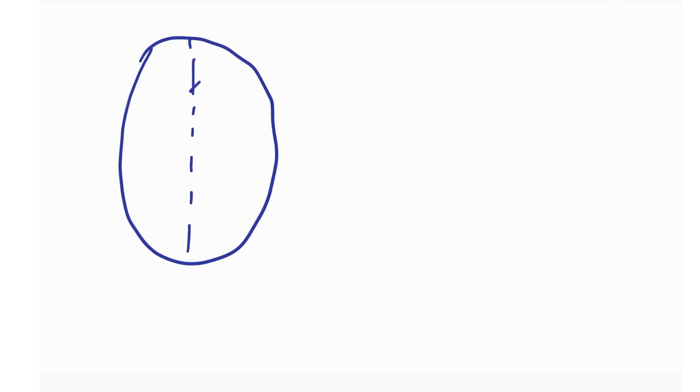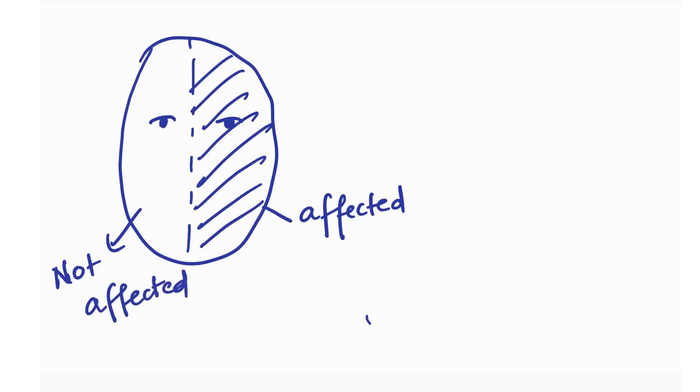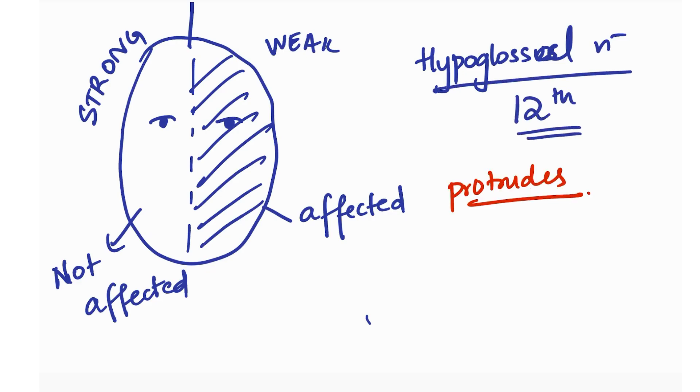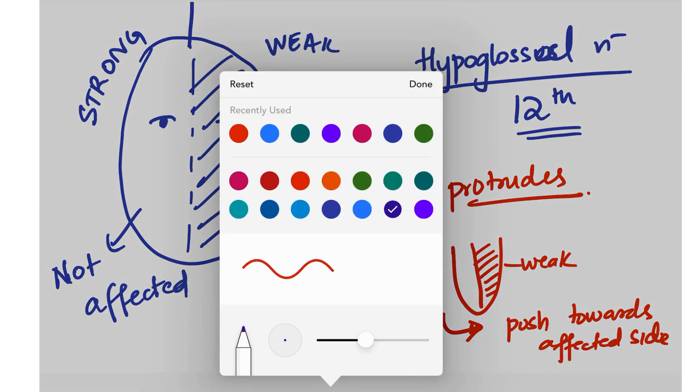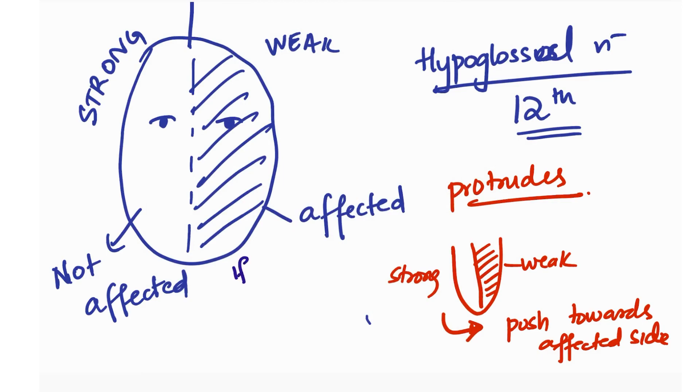Let's draw a face. This person has a lower motor neuron lesion, so one side is affected or paralyzed or weak. This is the affected side, the other side is normal. One side is strong, one is weak. The muscles of the tongue are supplied by hypoglossal nerve. When he protrudes his tongue, the strong side will push the tongue towards the weak side, towards the affected side. Normally both sides are strong and push equally, creating balance.